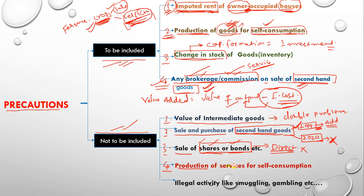The fourth item not to be included is the production of services for self-consumption. Note that goods produced for self-consumption are added, but services produced for self-consumption are not added. This is because assigning a correct market value to self-consumed services — determining exactly how much the services are worth — is considered a very difficult task, so they are not included.